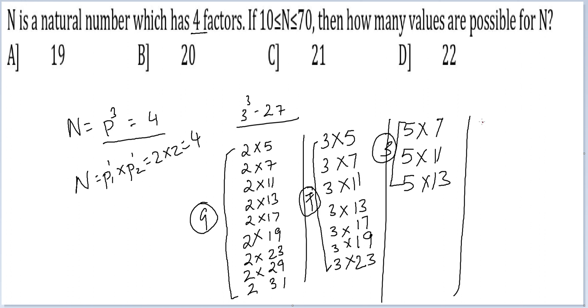Let's go to 7. Now when you are checking with 7, the smallest possible pair that you can make is 7 into 11, which is greater than 70. So this will not get counted.